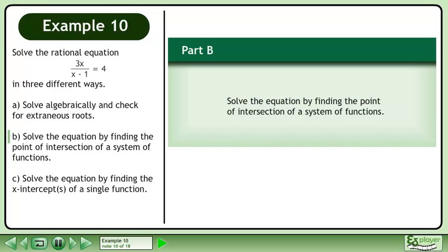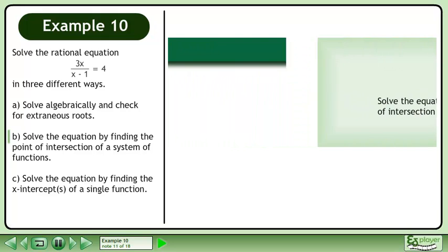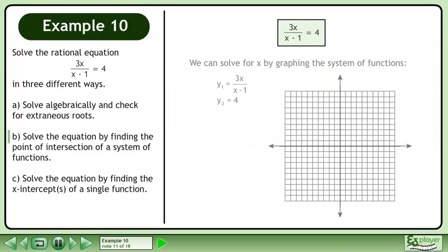In Part B, solve the equation by finding the point of intersection of a system of functions. We can solve for x by graphing the system of functions y1 equals 3x over x-1 and y2 equals 4.